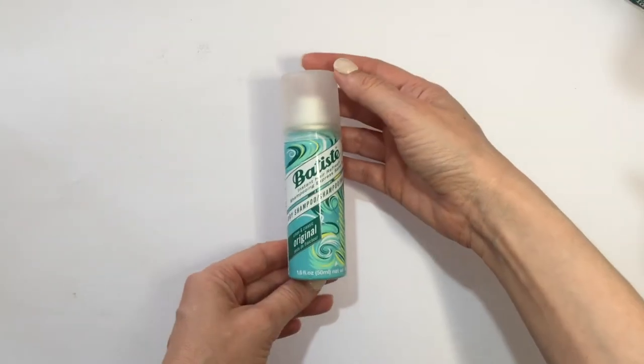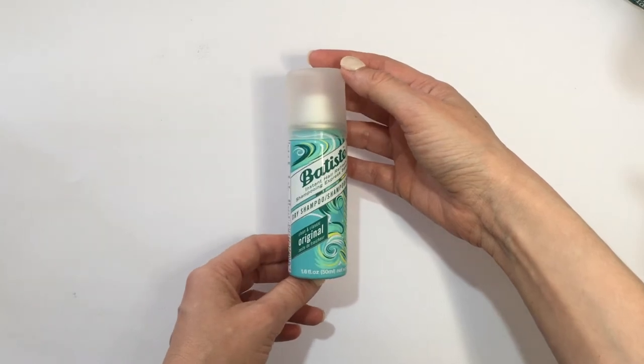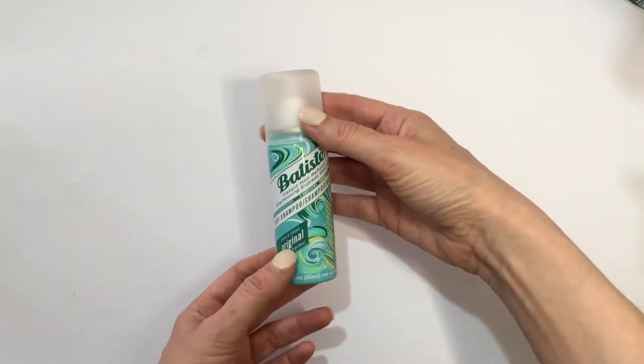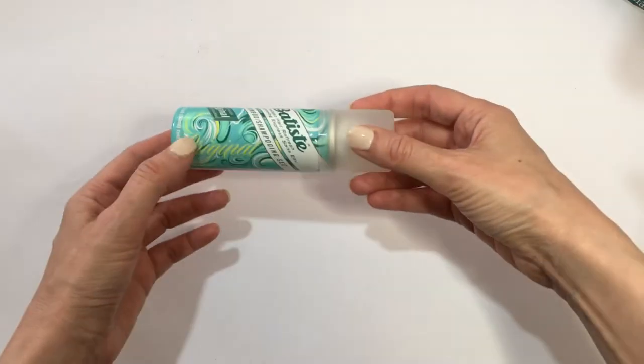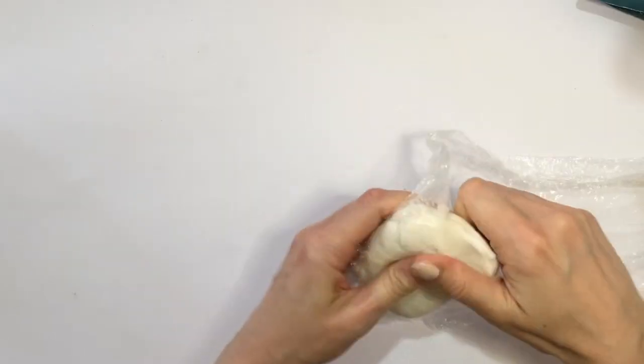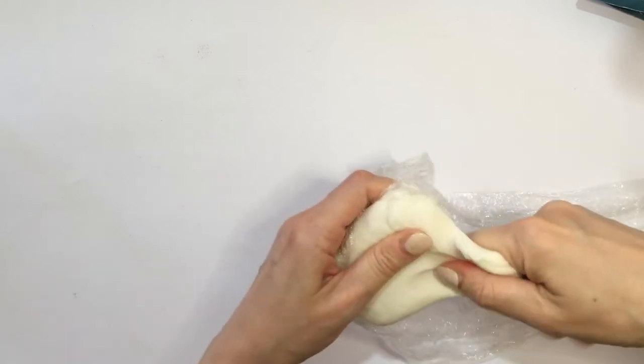I feel like I'm a broken record because I always use this, but I love it. I find it pretty easy to work with for accessories, but you can use polymer clay as well. I'm going to be using this bottle of dry shampoo. It's not the big one, but like a smaller size.